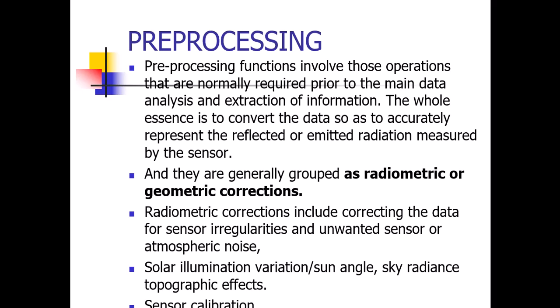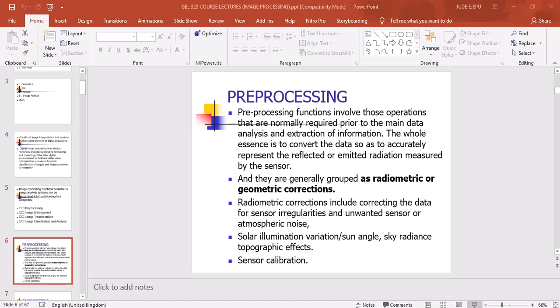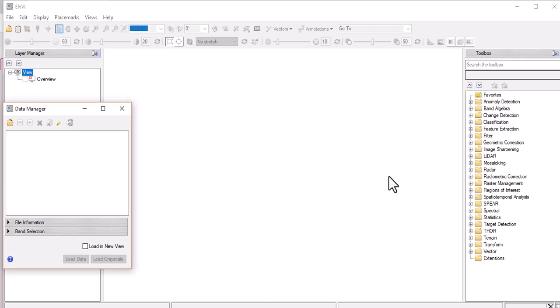Pre-processing is generally grouped as either radiometric or geometric, but in this video I'm going to be talking a lot more about radiometric corrections. Radiometric corrections involve correcting the remotely sensed data for sensor irregularities, unwanted sensor noise, atmospheric noise from solar illumination variation, sun angle, sky radiance, topographic effects, and even sensor calibration issues.